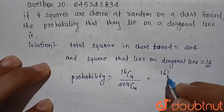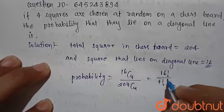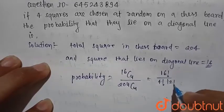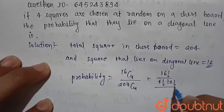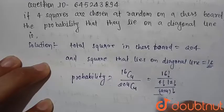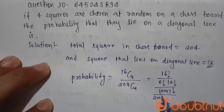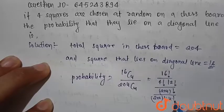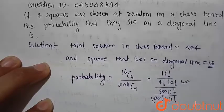This is equal to 16 factorial divided by 4 factorial times 12 factorial, divided by 204 factorial divided by 200 factorial times 4 factorial. This is the probability of our given question.